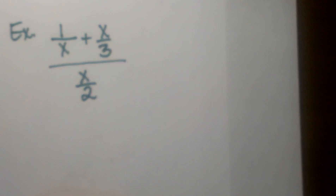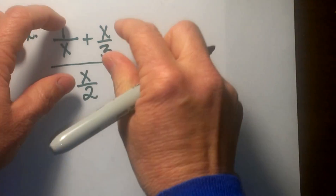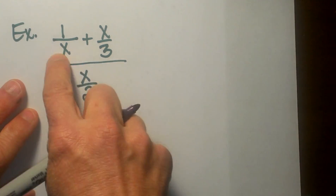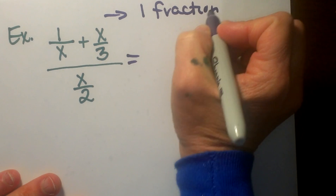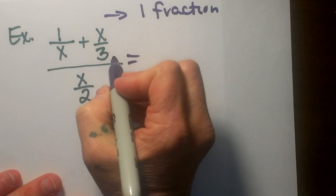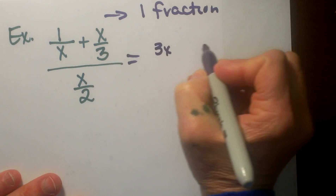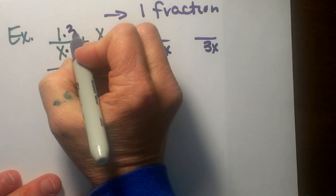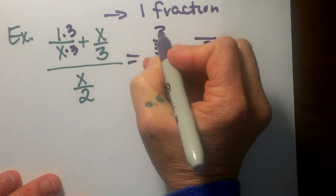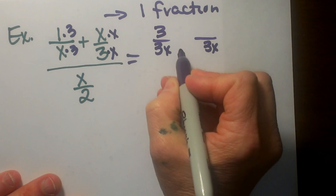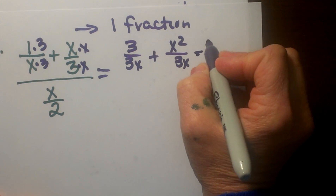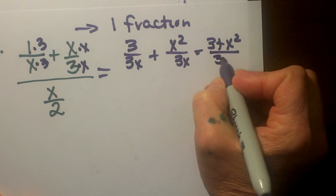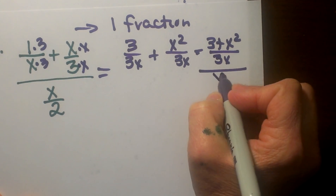Now let us look at one more. This one actually has an extra step. We have two separate fractions in the numerator divided by x over two. So the first thing I need to do is simplify the top to get it down to one fraction. In order to get this to one fraction I have to find a common denominator. I have an x and a three, so three x is my common denominator. I need to multiply the first fraction by three, giving me three on top and three x on the bottom. The second fraction I need to multiply by x to get three x, giving me x squared over three x. Adding those gives me three plus x squared all over three x, and I am still dividing by x divided by two.